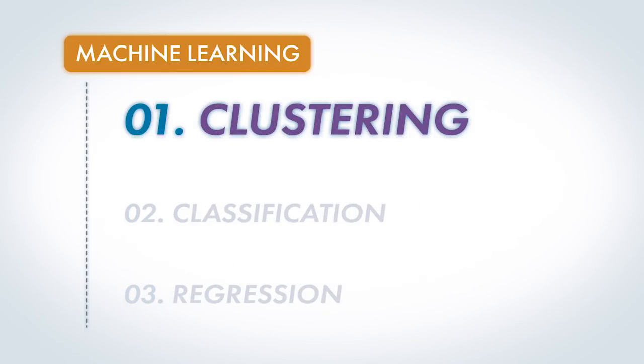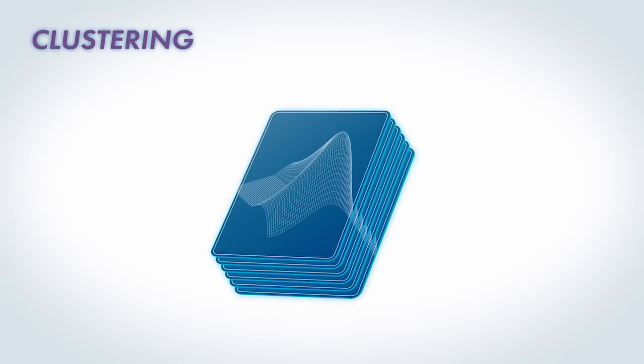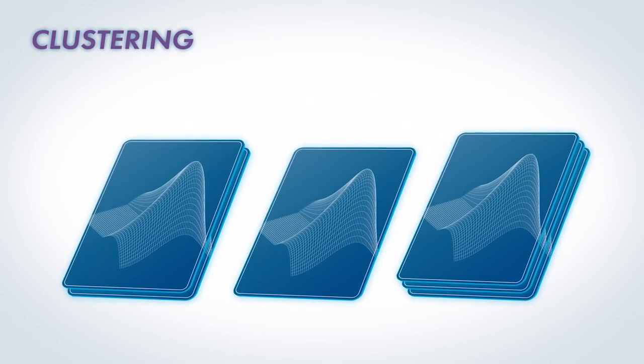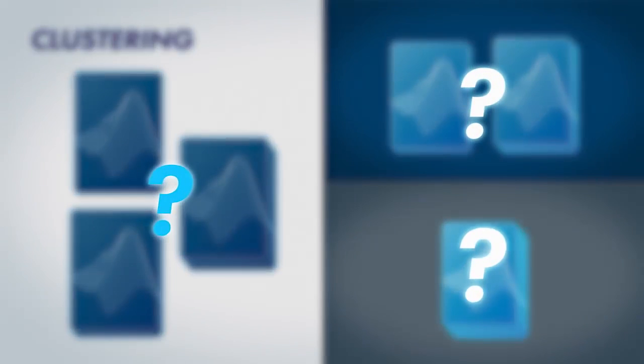First, we'll talk about clustering. Suppose I give you a stack of cards with pictures on them, and I ask you to sort the cards into groups. Different people group these cards in different ways. What's on these cards to cause that to happen?